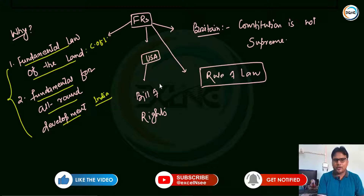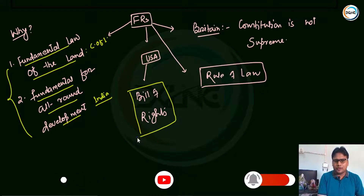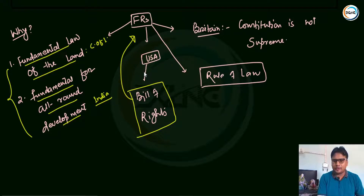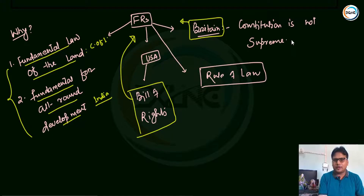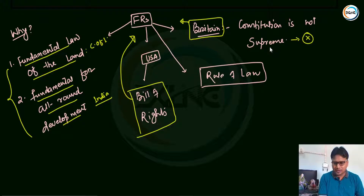That is why fundamental rights are very essential and necessary, and they are guaranteed and protected by the fundamental law of the land — the constitution. The source from which fundamental rights are borrowed is the Bill of Rights of the USA. In Britain's context, the constitution is not the fundamental law of the land and is not supreme. Therefore, the set of rights there are not called fundamental rights.